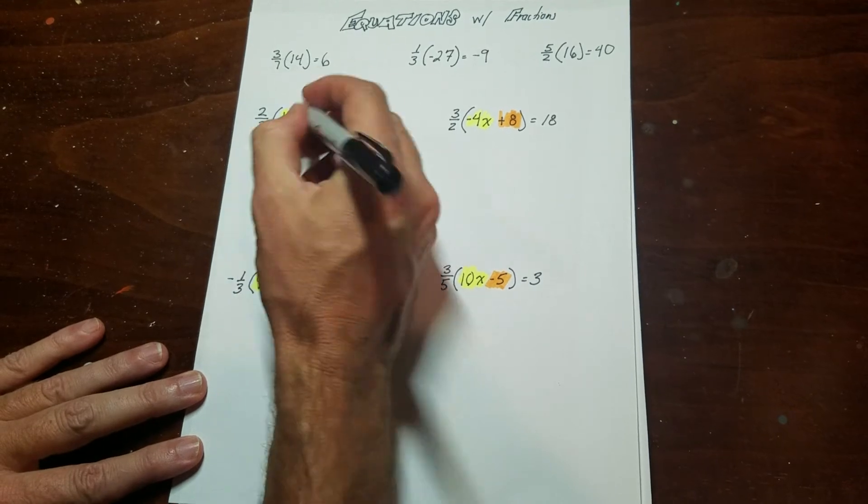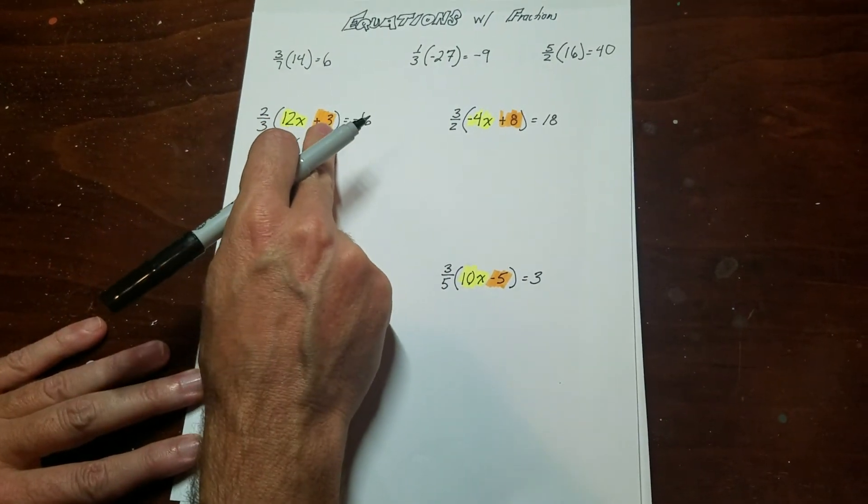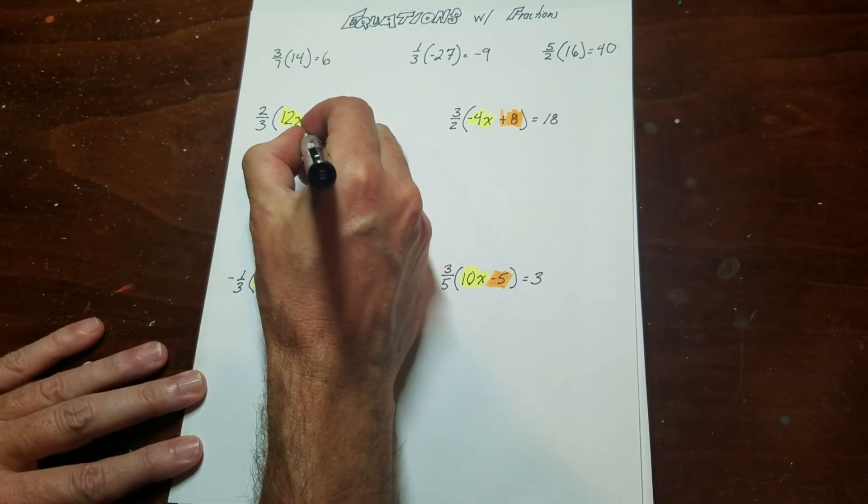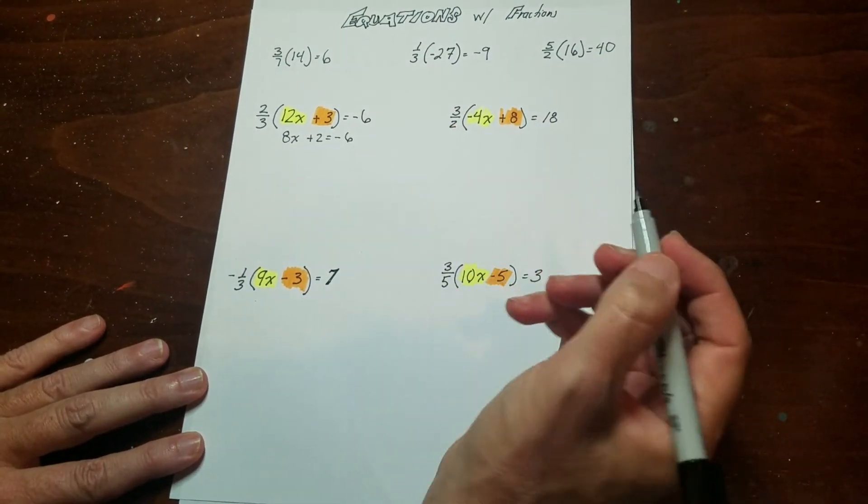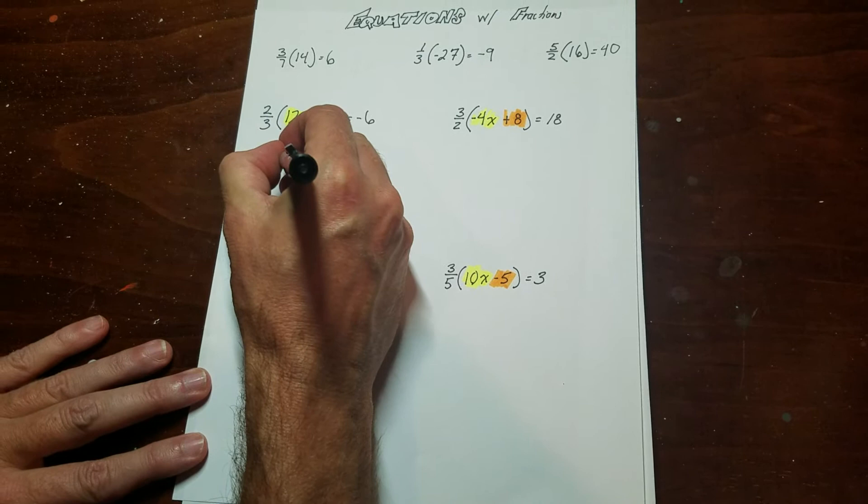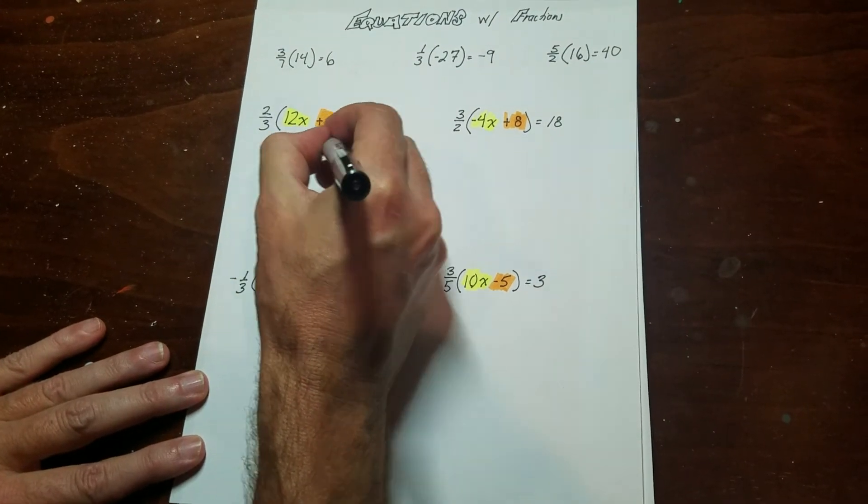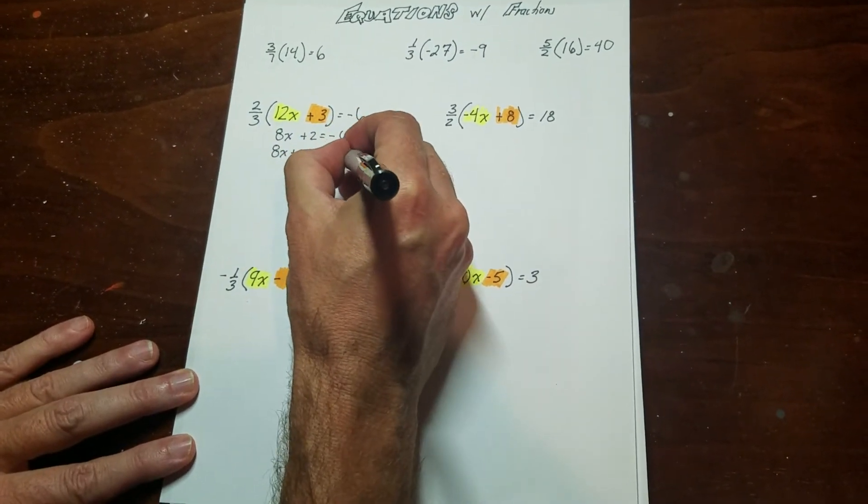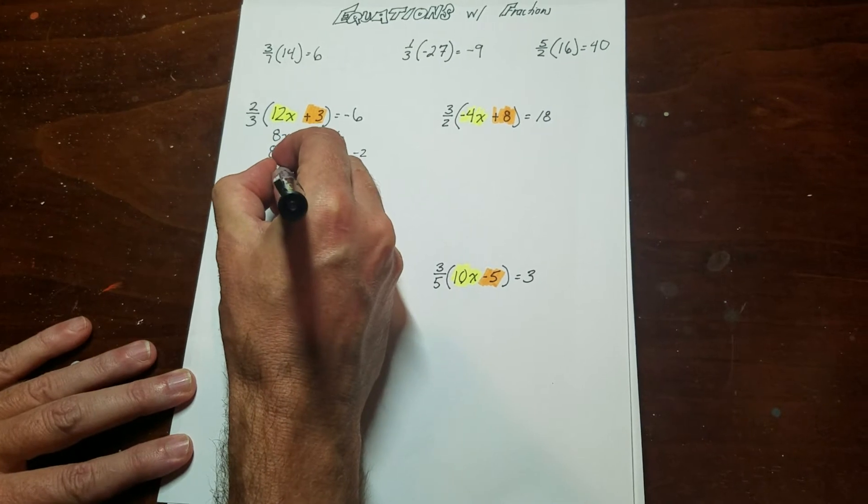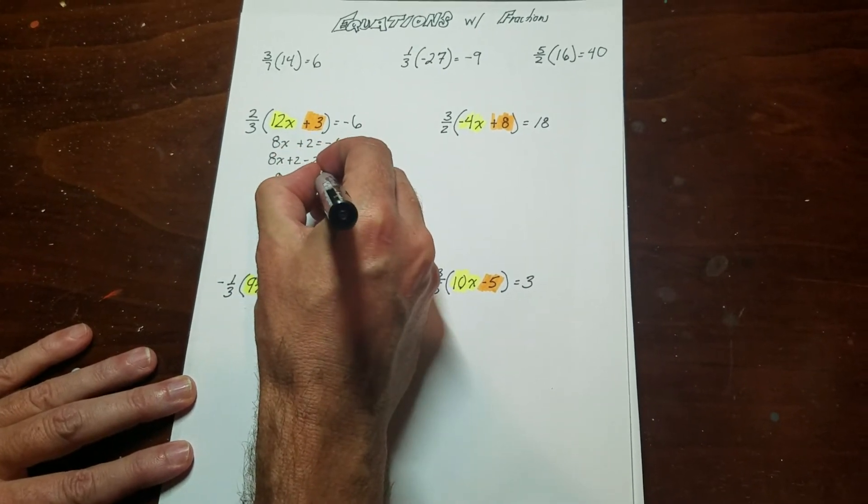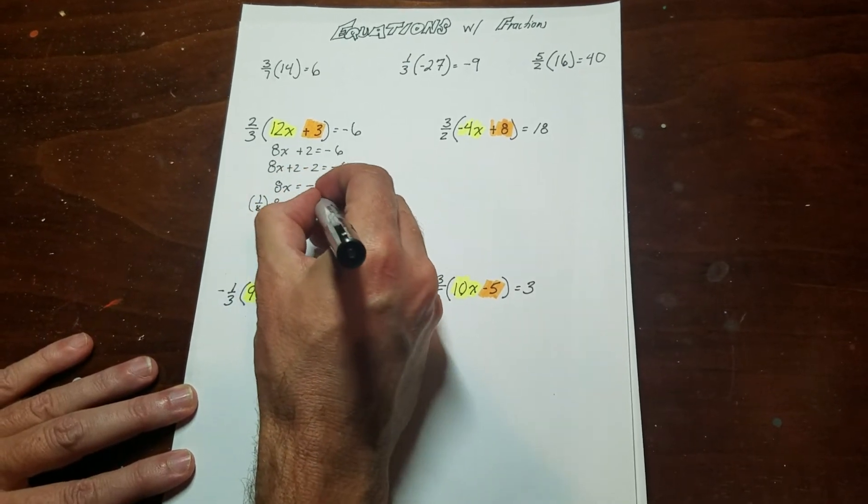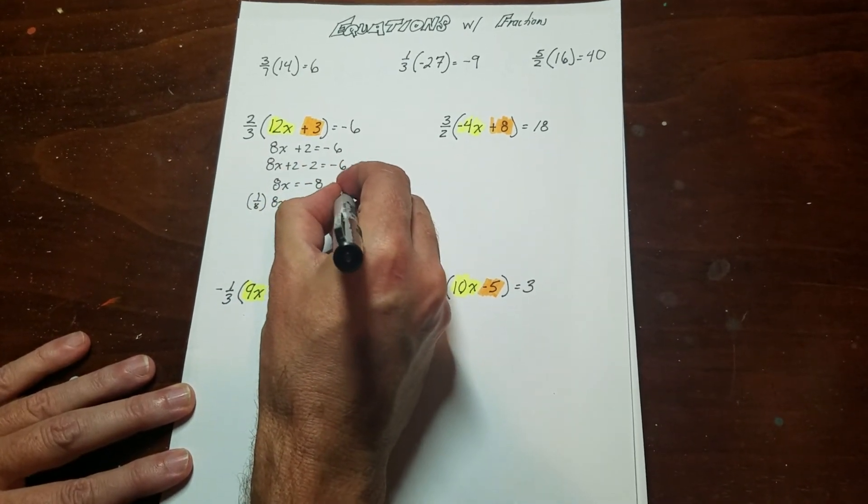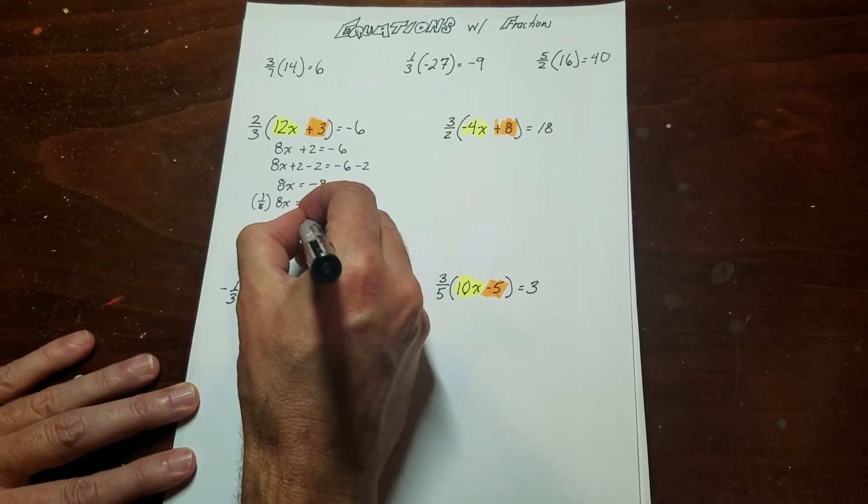So this is 8x. 3 goes into 3 one time. 1 times 2 is 2. And then I've got that. So once I get to this, this is pretty much your standard two-step equation from there. Everything else is going to work exactly the same as it does for problems with just integers. These are actually just as easy, as long as you just do what I just did.